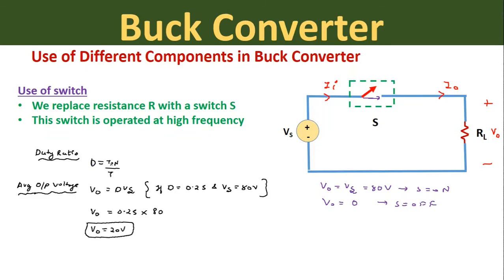The duty ratio D is equal to the ON period of the switch divided by the total time period T. The average output voltage of this buck converter is given by D times Vs. If we want an output voltage of 20 volts from an 80-volt source, we take a duty ratio of 0.25. Substituting these values gives V0 equals 0.25 times 80, which equals 20 volts. This is the lossless conversion from 80 volts to 20 volts.